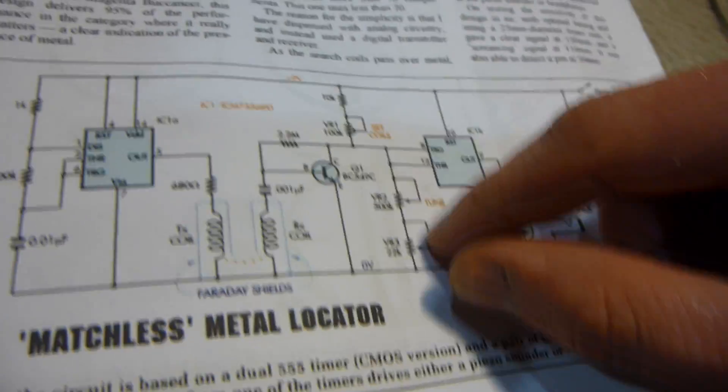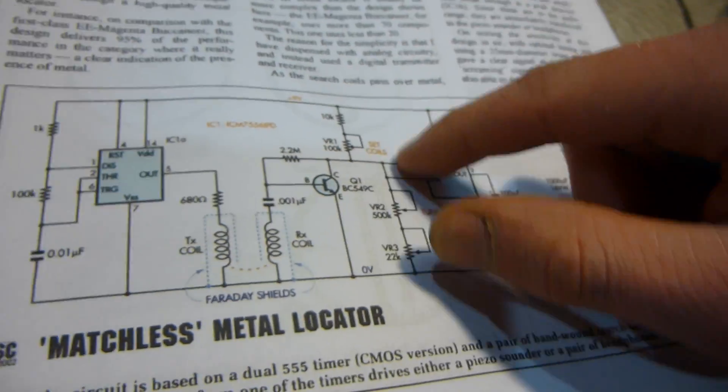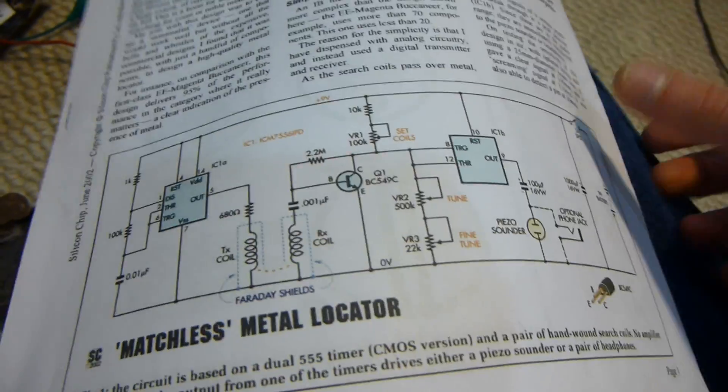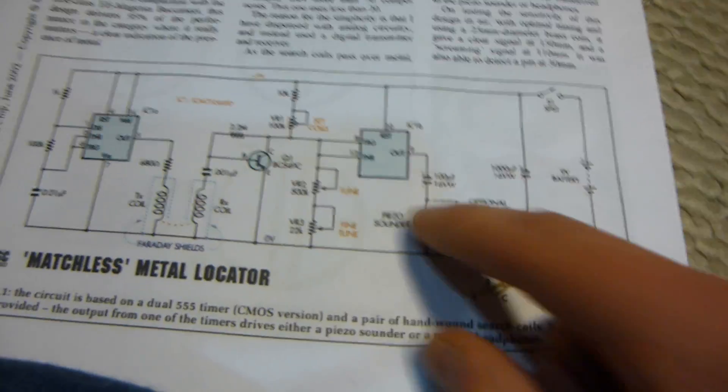And then it's got a bunch of variable resistors here to adjust where that point is that it will trigger and turn off. So, but I've took it up to his oscilloscope here sometime and actually look at the signal and see what it's doing exactly.